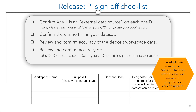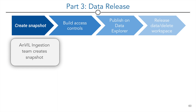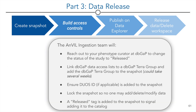Note that snapshots are immutable — making changes after release will require a new snapshot or version update. Once the final sign-off is received, the Anvil ingestion team proceeds with the release of the data. First, the Anvil ingestion team creates a snapshot of the data. Anvil ingestion team then coordinates with dbGaP to establish access controls. They reach out to the Phenotype Curator at dbGaP to change the status of the study to released. The data submitter will be included on the email sent to dbGaP. They link the dbGaP data access list to a dbGaP Terra group and add the Terra group to the snapshot. They ensure the DUO's ID, if applicable, is added to the snapshot. They lock the snapshot so no one may add, delete, or modify data. And finally, they add a release tag to the snapshot, which will signal adding it to the catalogue.